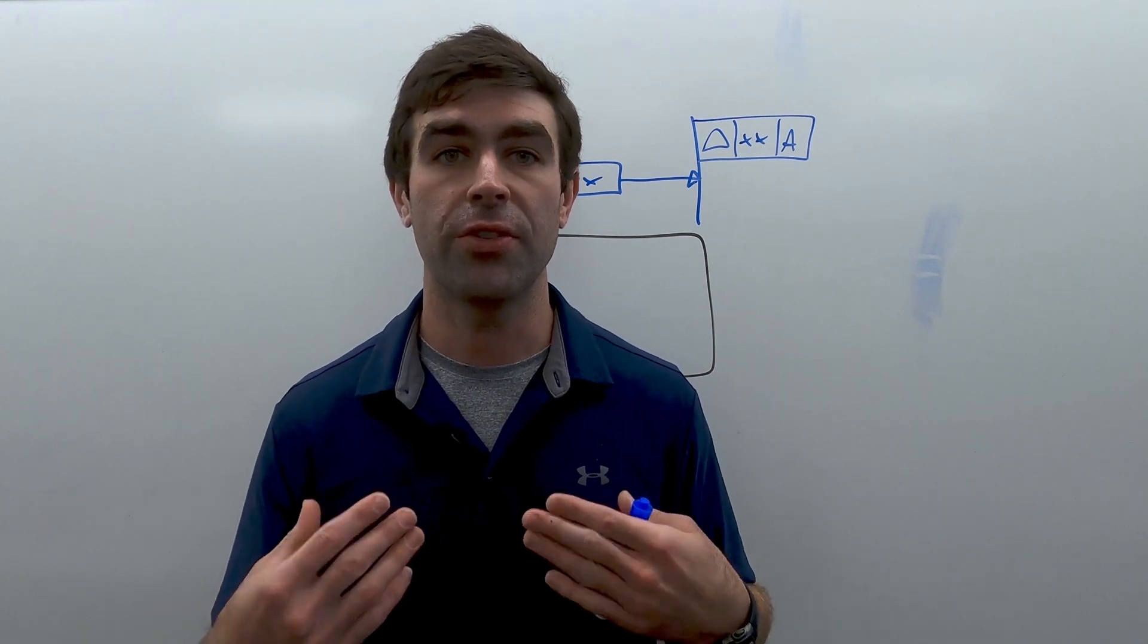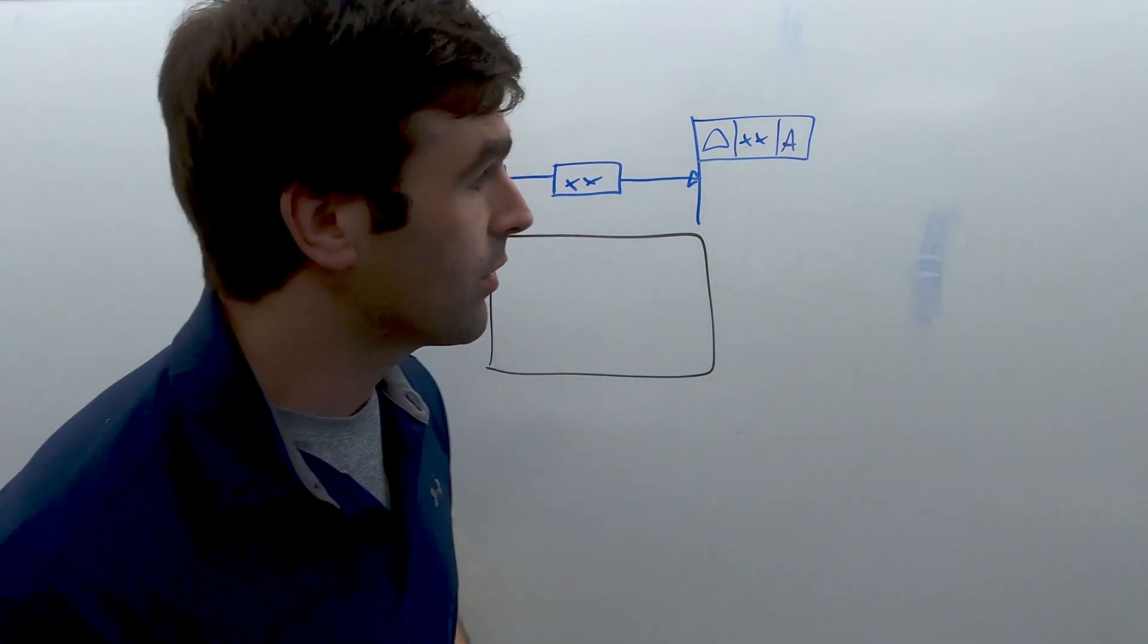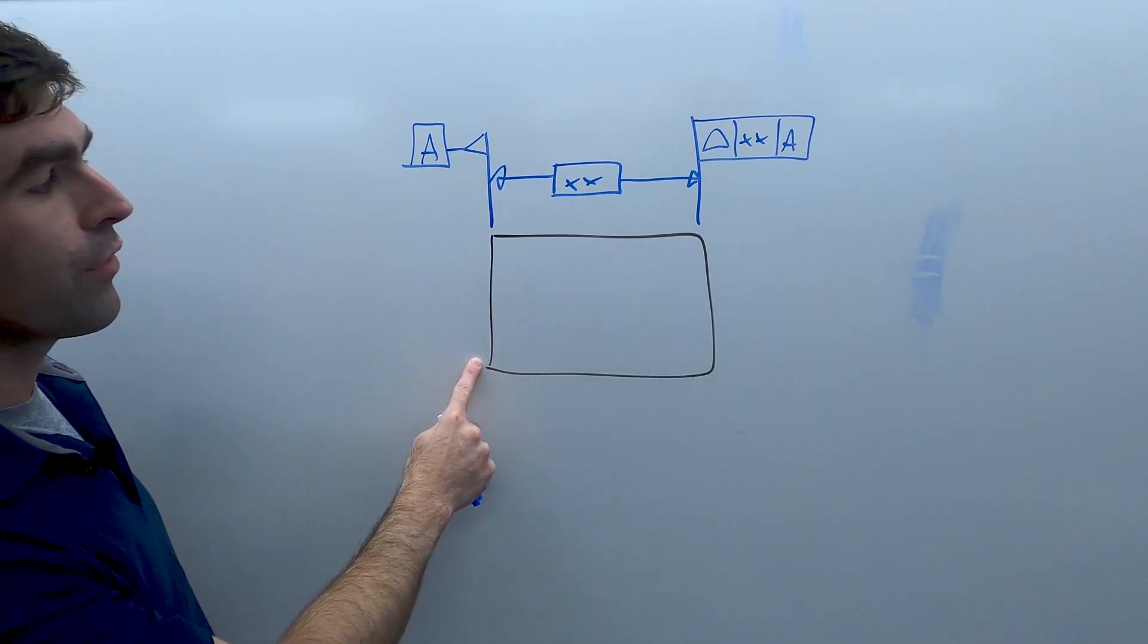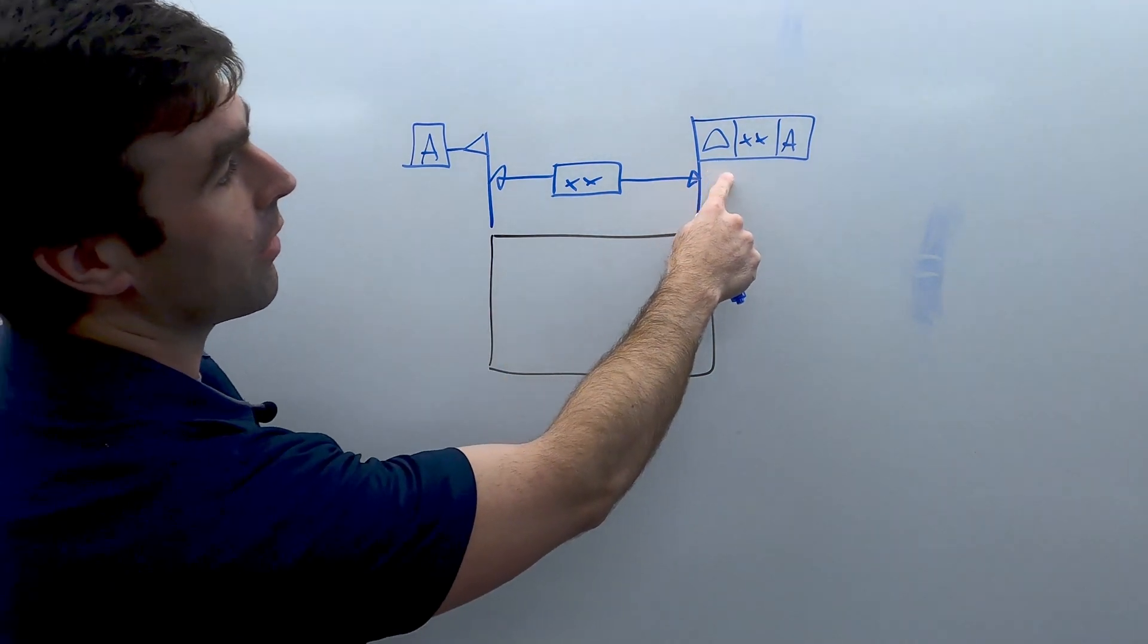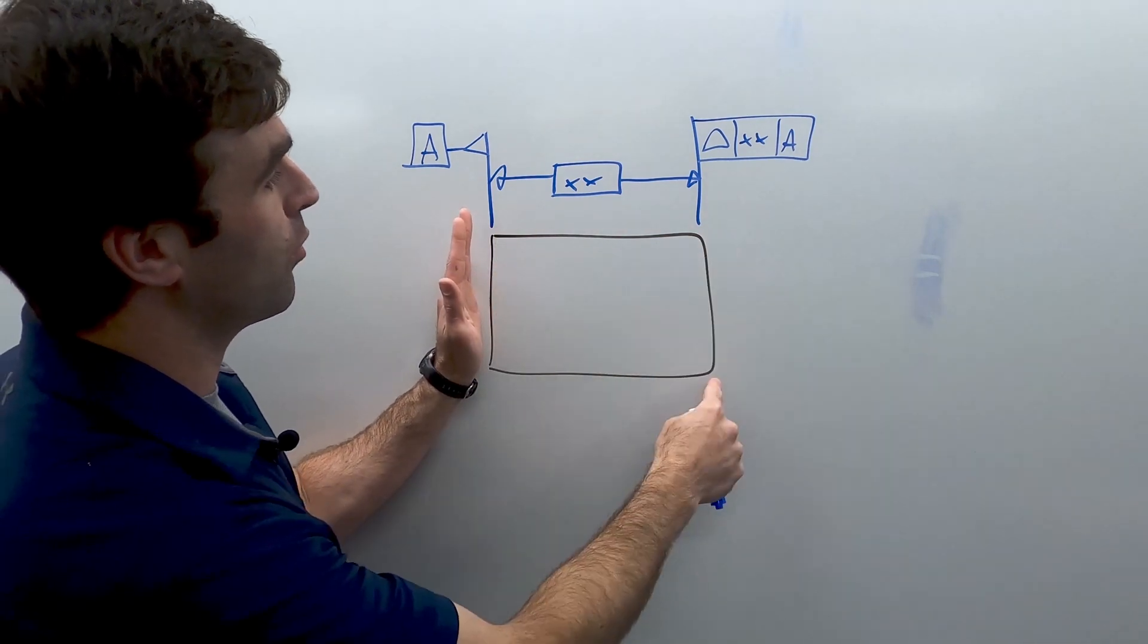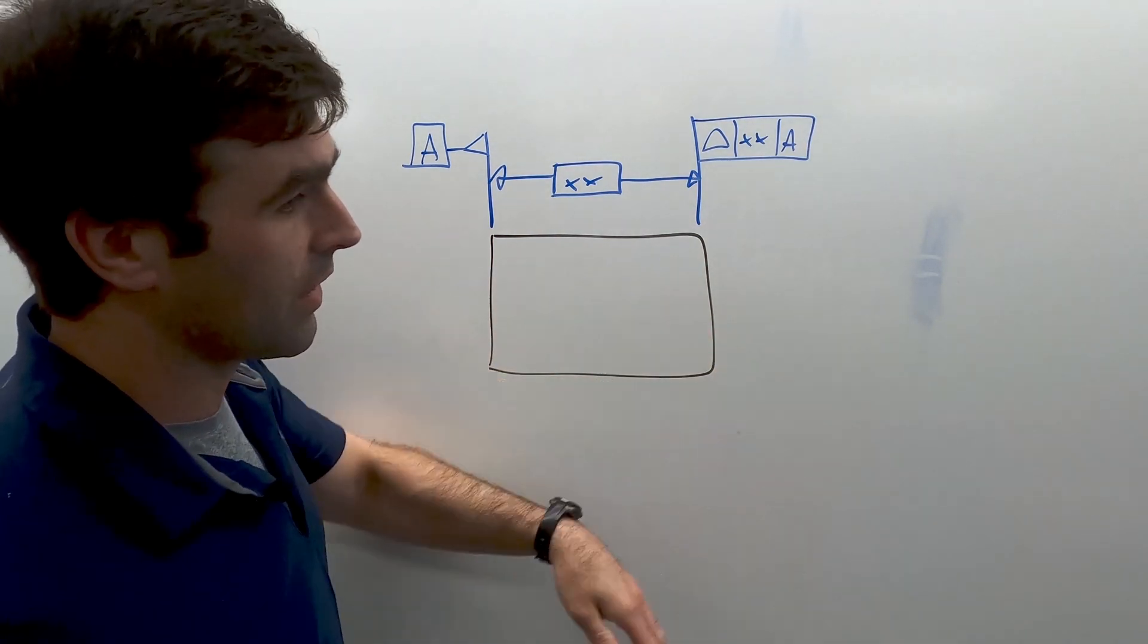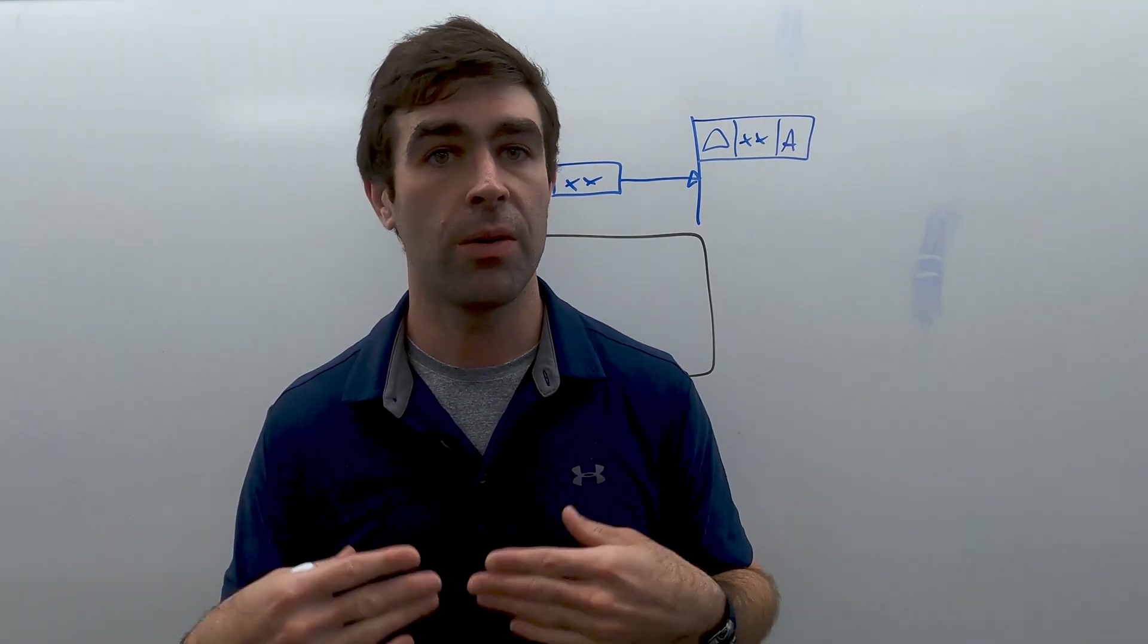A datum feature symbol indicates where the datum feature is. So in this quick little drawing, this little guy right here is a datum feature symbol. It indicates that this surface over here is a datum feature. So when we go to figure out whatever this is, we're going to put the part right here and measure over here to figure it out. Instead of say we put the part right here and then we measure from here to here. It's a whole system of doing it and we'll go into it in later units.